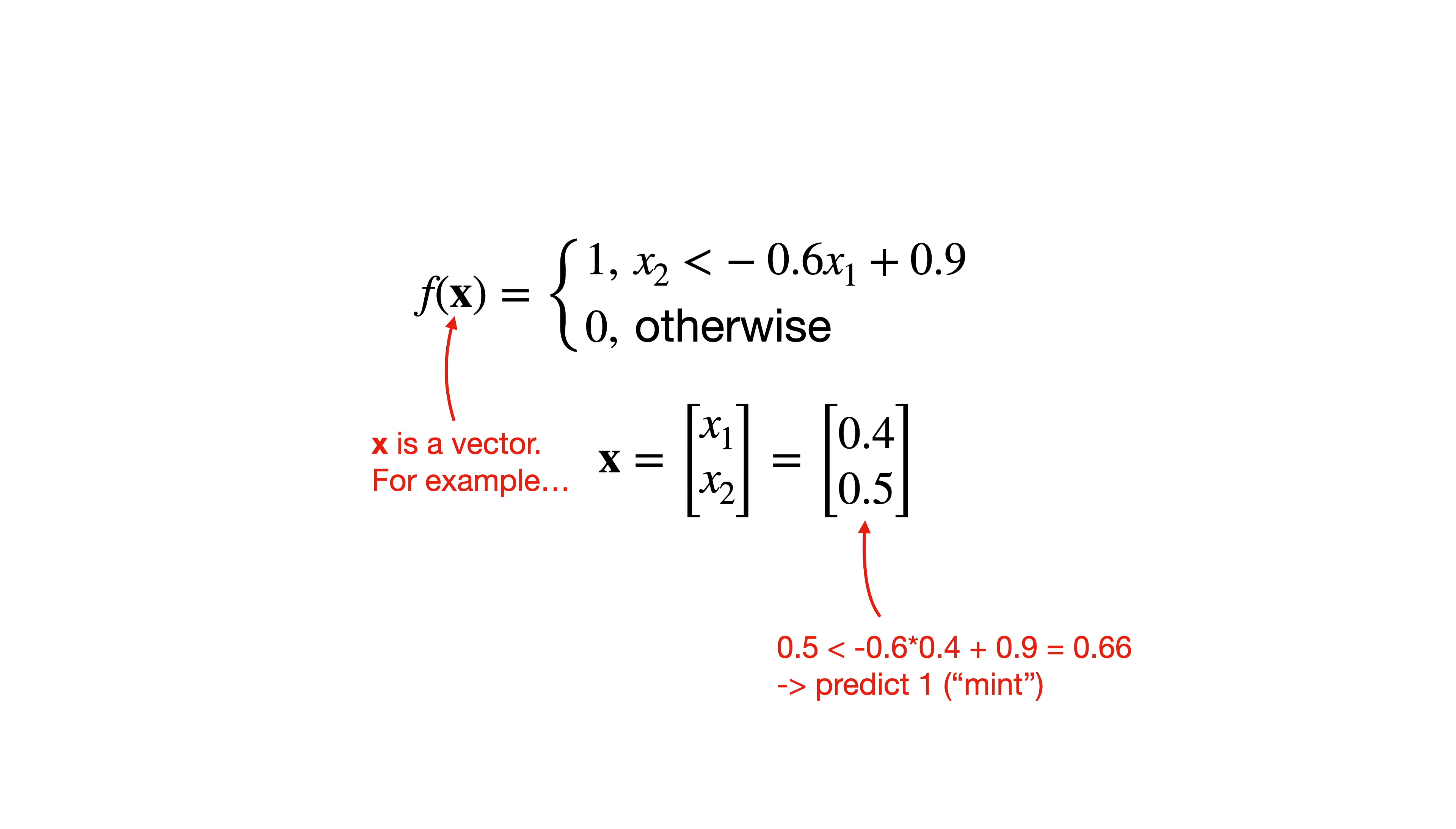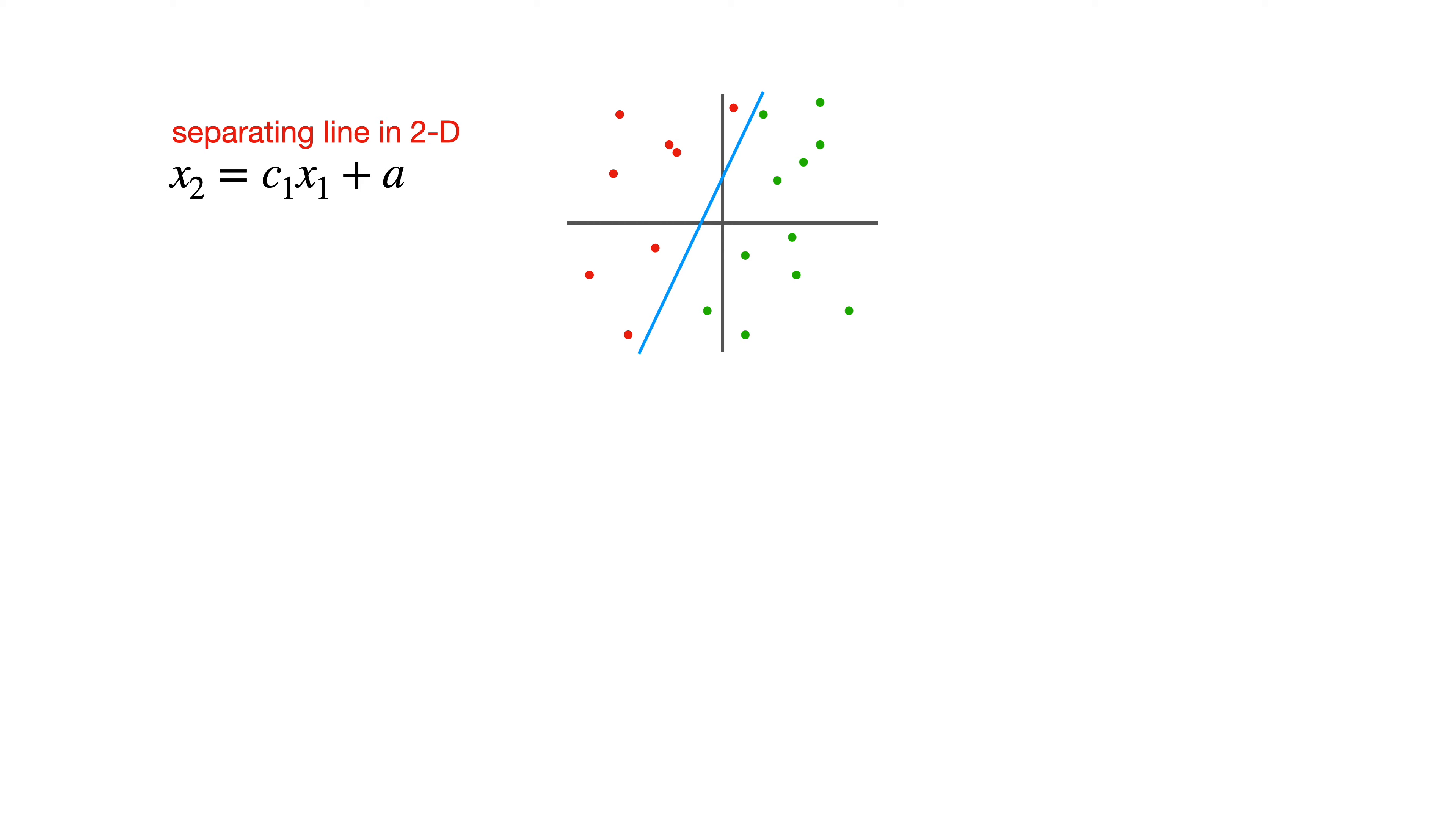Let's see if we can generalize and formalize it a bit. Firstly, our data had two features, meaning we were operating in a two-dimensional space. So we described our separating line as x2 equals c1 times x1 plus a, in other words a coefficient times x1 plus an offset. Now what if we had three features? Then we could just do x3 equals c1 times x1 plus c2 times x2 plus a. And if we had n features, then we could use x_n equals c1 times x1 plus c2 times x2 on up to c_(n-1) times x_(n-1) plus a.